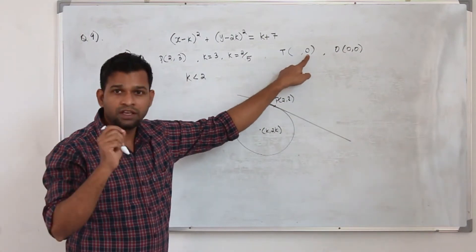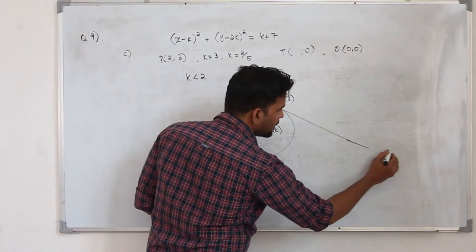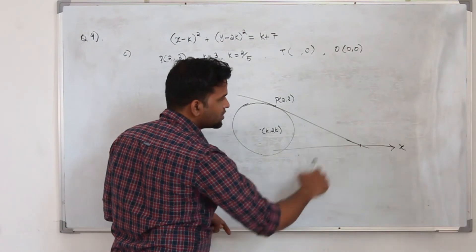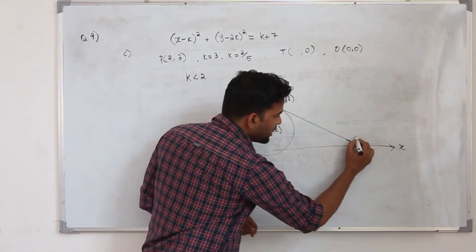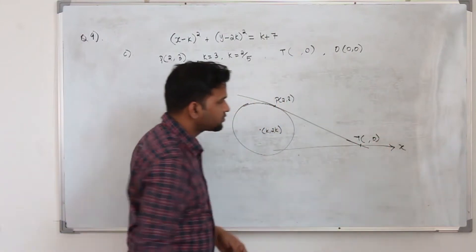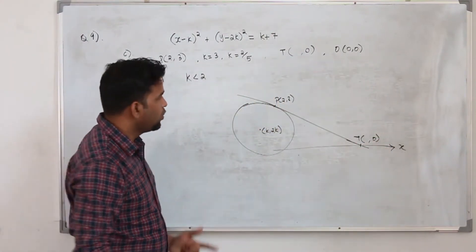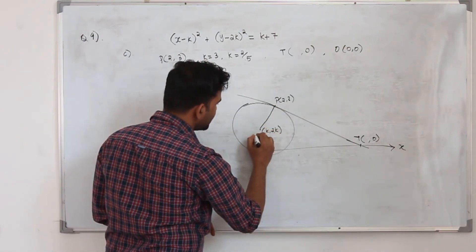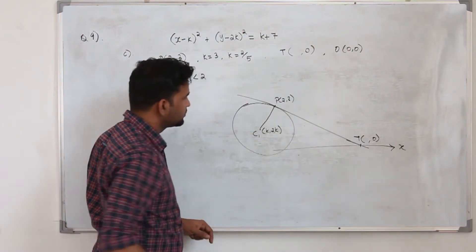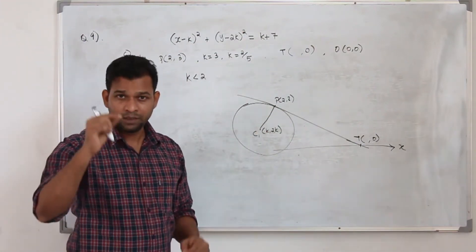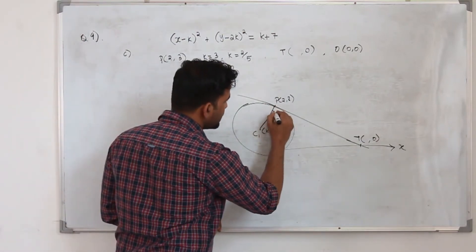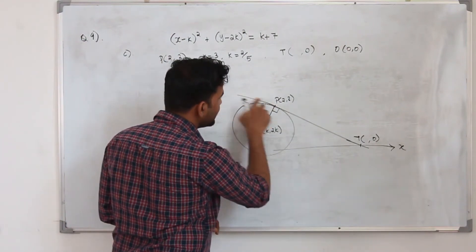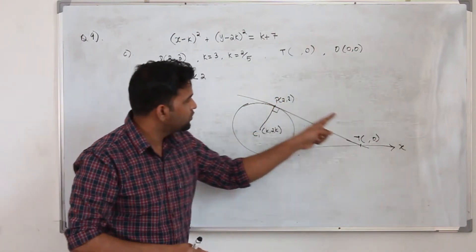Now we need to find the equation of the tangent. First, find the gradient of the line from center C to point P. The radius must be perpendicular to the tangent, so take the negative reciprocal of that gradient to get the gradient of the tangent line. Then use one of the known points to find the equation.